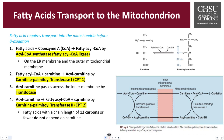Fatty acids are stored in the form of triglycerides inside lipid droplets. When energy demand increases, such as when you are exercising and need ATP, the stored triglycerides are hydrolyzed into fatty acids and glycerol. With glycerol directly able to enter the glycolytic pathway, fatty acids need to be transported into the mitochondria for beta-oxidation. Let's take a look at some of the key steps involved.